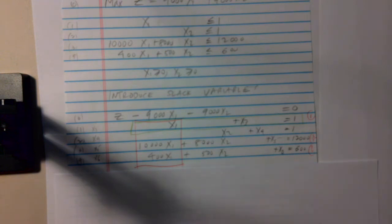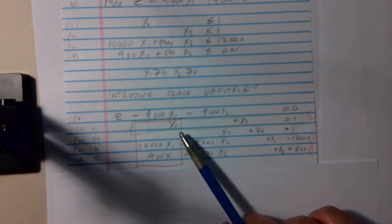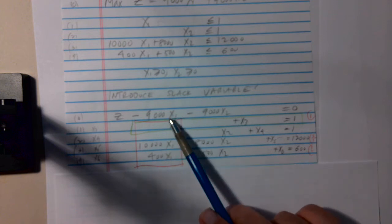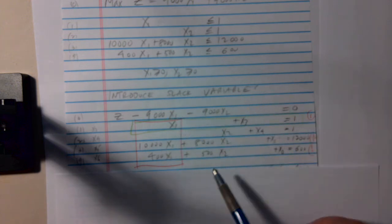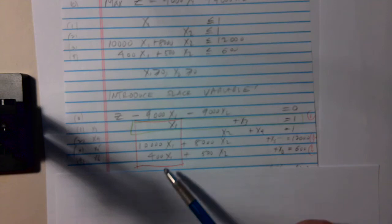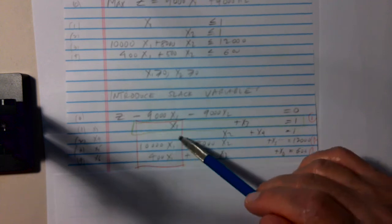So we'd like to increase either X1 or X2 to increase the value of the objective function. Now we look at this equation for the objective function, and we choose the variable with the largest in absolute value coefficient, the negative coefficient, largest in absolute value. In this case, they're equal. So we could choose either X1 or X2 as the variable we will change from non-basic to basic. So we'll choose X1. I could choose X2, but I'm choosing X1.